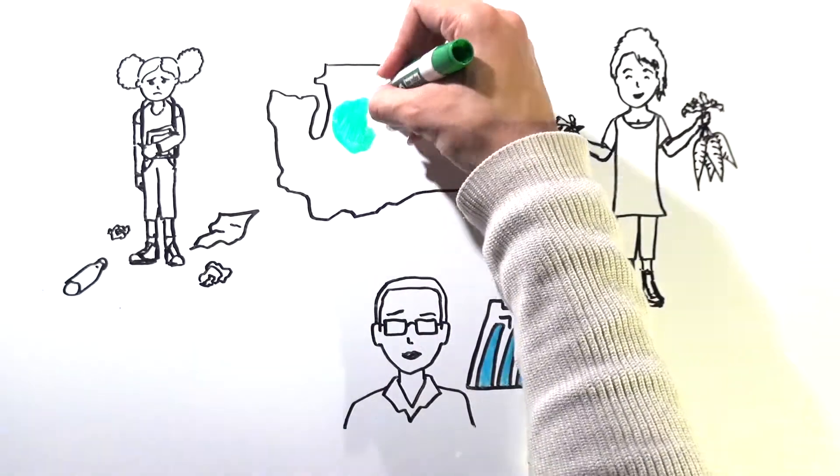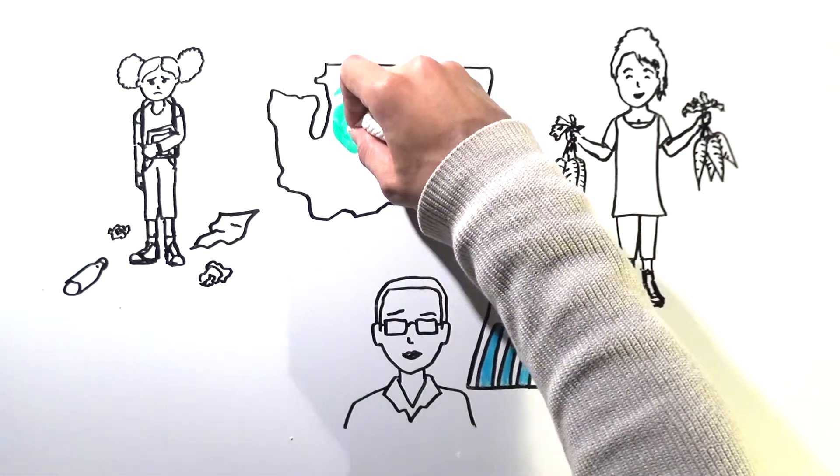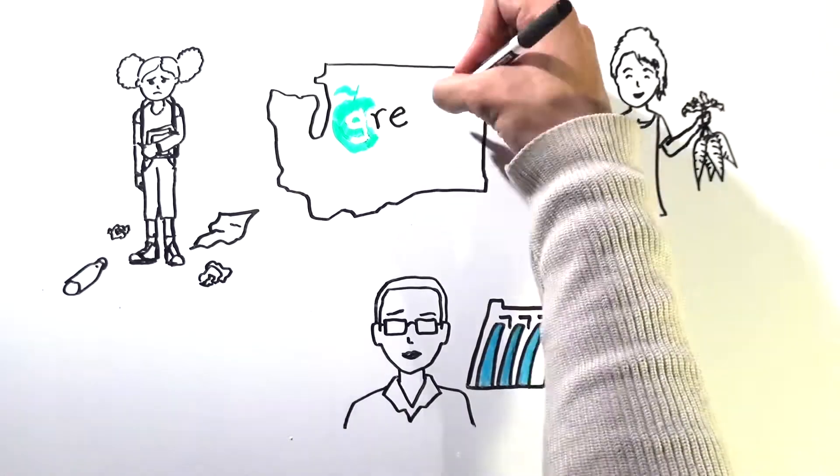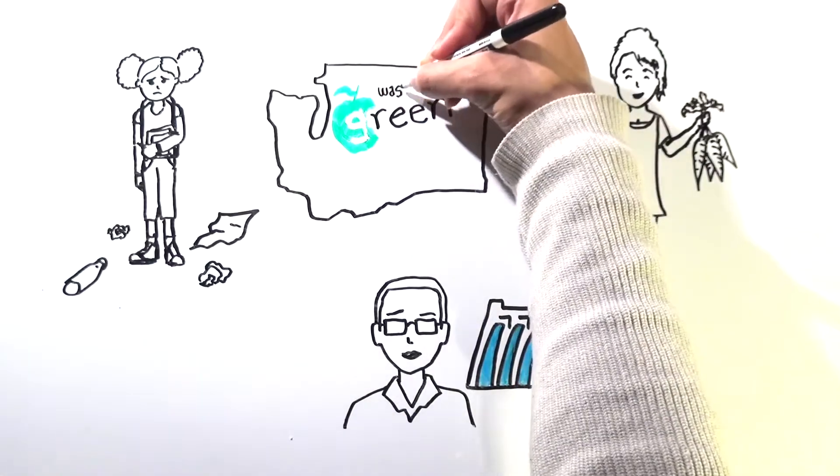Washington Green Schools is here to help. We guide and support students, teachers, and community members across the state to tackle the environmental challenges they face at their schools.